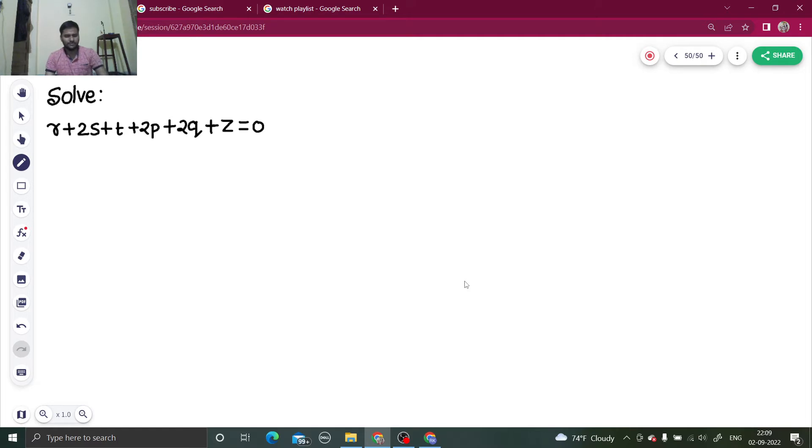What is your r? r is your del 2z by del x square.